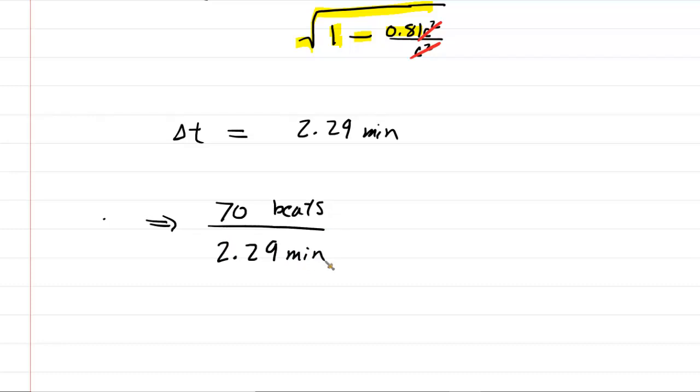And when you divide these two numbers, you're going to get a heart rate of about 31 beats per minute. So we'll abbreviate that BPM. And this would be the correct answer to the question.